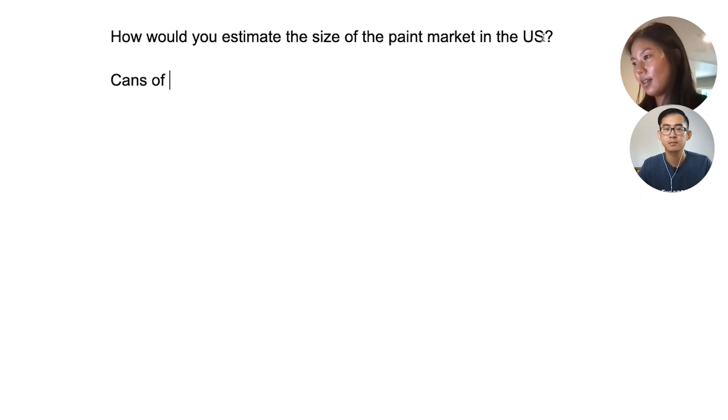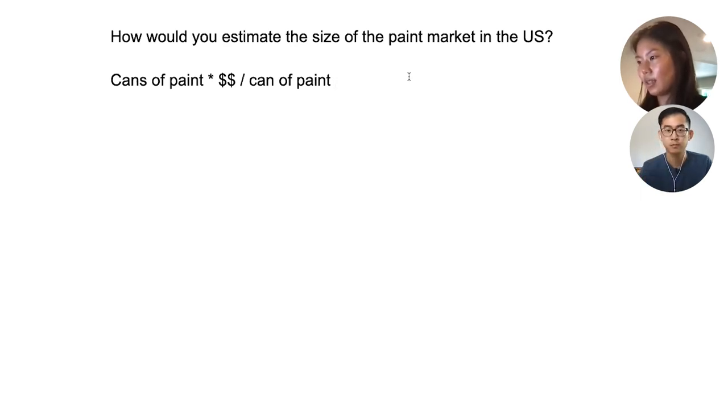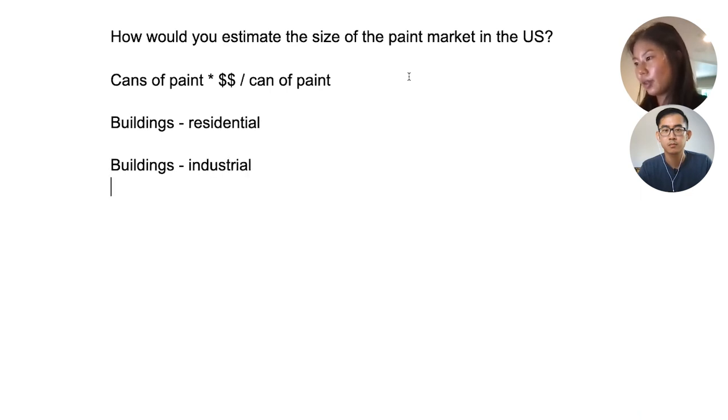That's a pretty good spectrum to start with. So for the purpose of this exercise, my gut says we should focus on residential buildings, industrial buildings, and vehicles to start. Because if you think about all the vehicles and all the buildings in the US, the scale would dwarf art supplies. But if we come to the end and feel like the estimate is off, we can revisit. So at a high level, if we take a unit of paint — say a can of paint — to find the total market, we'd want to see how many cans of paint are being used per year, multiply that by how much a can of paint costs.